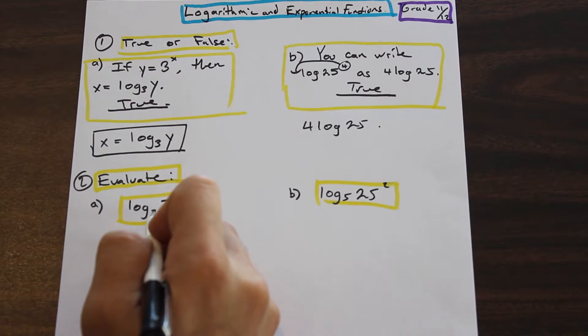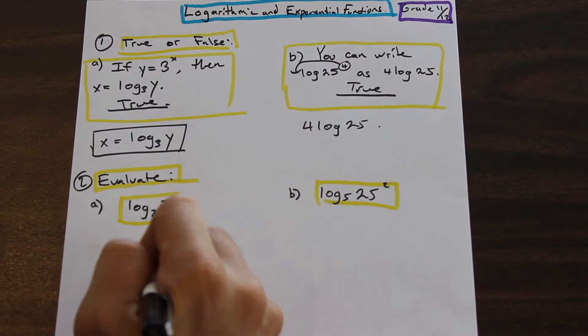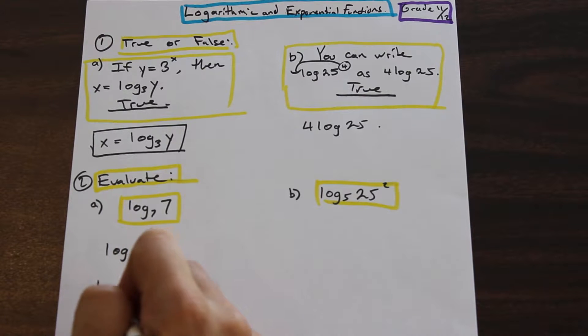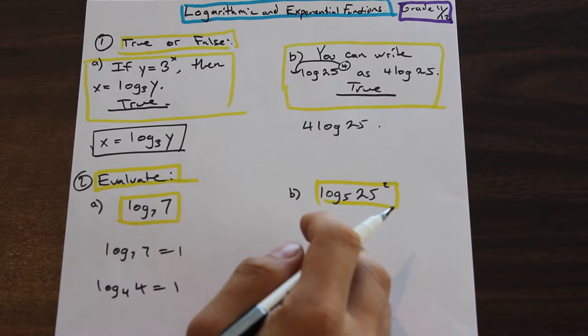So if you have log four base four, four - log seven, seven is equal to one. Same thing, if you have log four, four, that's going to be equal to one.